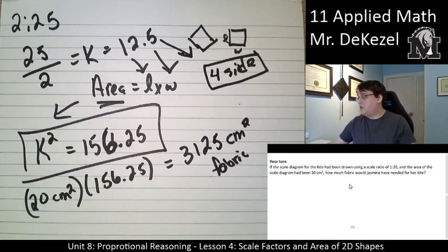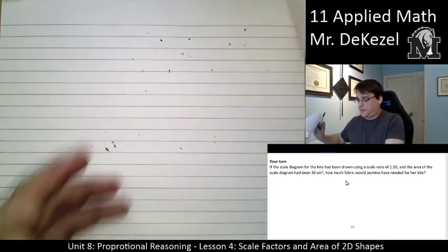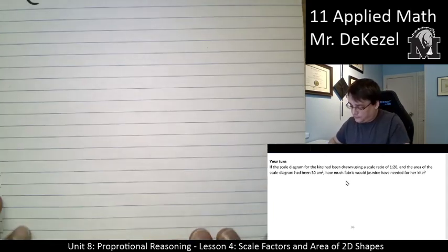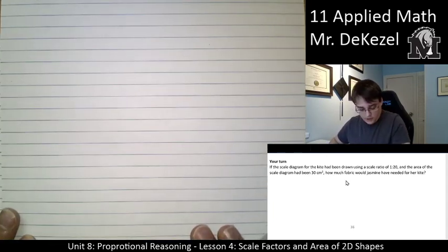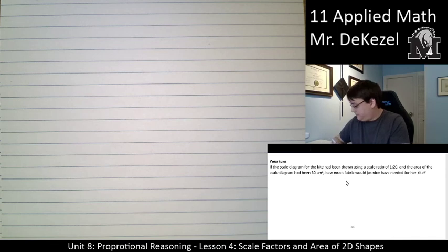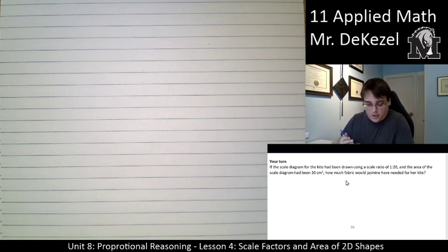There's a section now, your turn. It changes up the ratio and the scale diagram a little bit. So pause it here, give it a try, and then unpause, and you can see if you got it right. Let's change up the color. Do blue. I almost threw it off my desk, but I caught it.